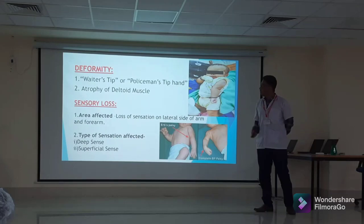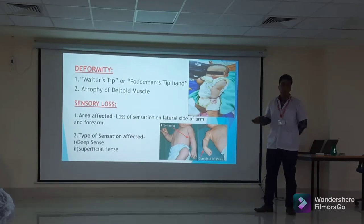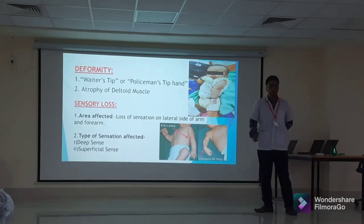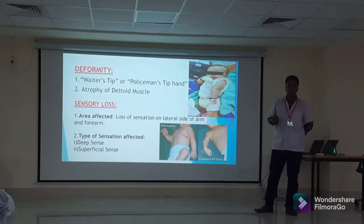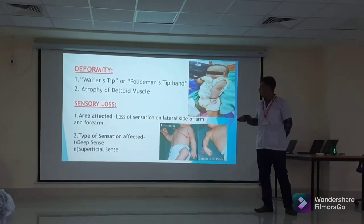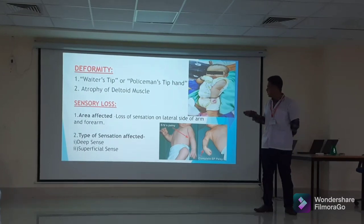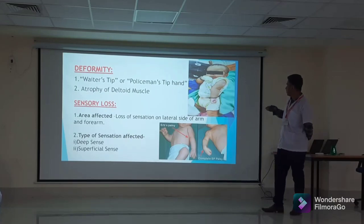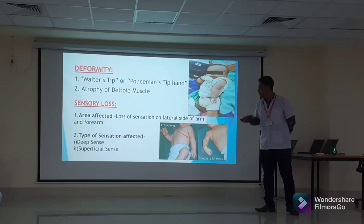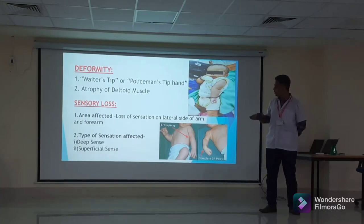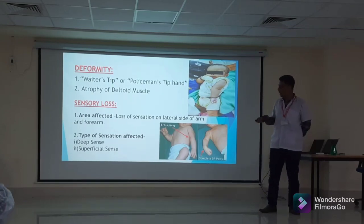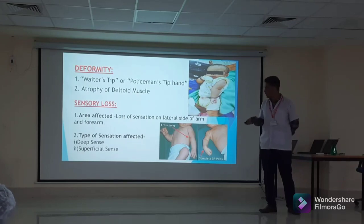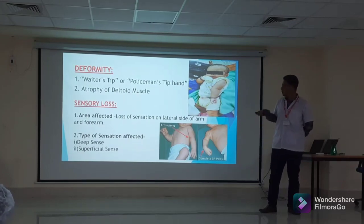The deformity is commonly known as the waiter's tip position or policeman's tip hand. There is atrophy of the deltoid muscle, causing loss of the rounded contour of the shoulder. Sensory loss involves the lateral side of the arm and forearm. Both deep sensation — at the muscular and joint level — and superficial sensation are affected.